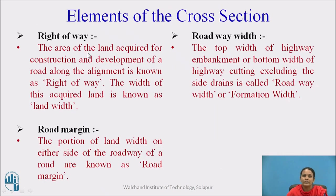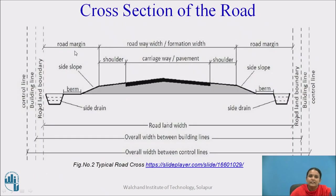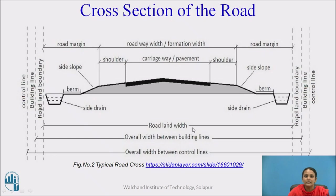Right of way means it is the actual land which is occupied for the road construction. If you see in this figure, road land width is nothing but the right of way — it is the total area occupied by the construction of road.